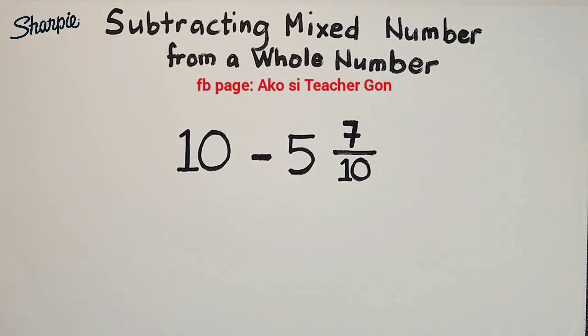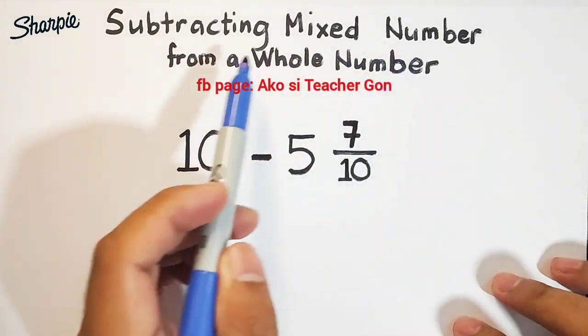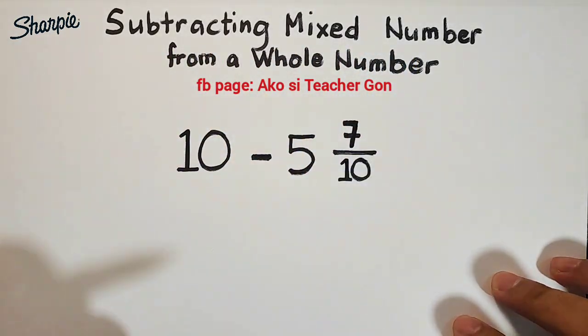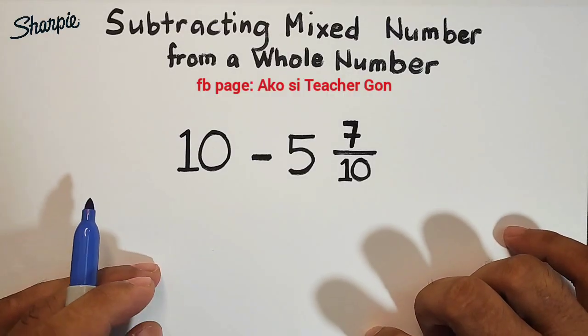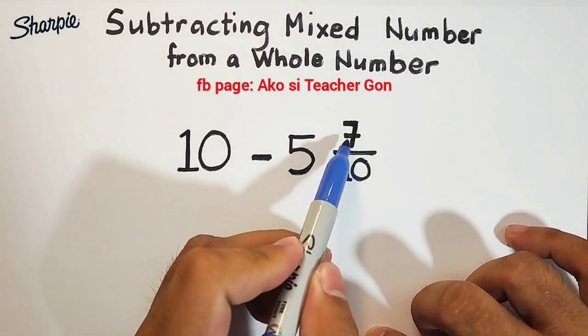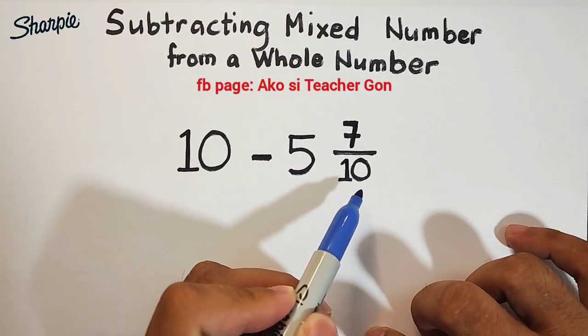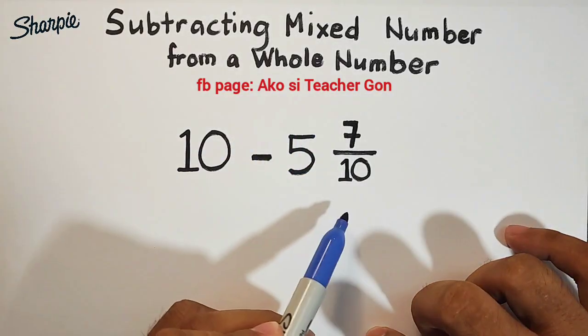Hi guys, it's me Teacher Gon. In today's video we will talk about how to subtract a mixed number from a whole number. So without further ado, let's do this topic. As you can see, we have here our example: 10 minus 5 and 7 over 10. This is your whole number and this is your mixed number.